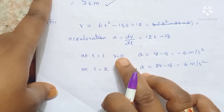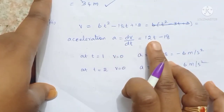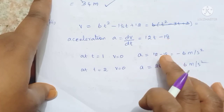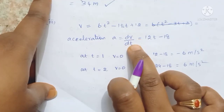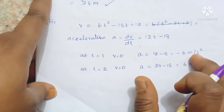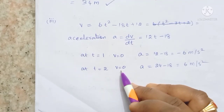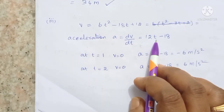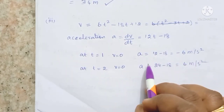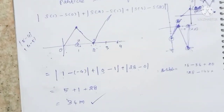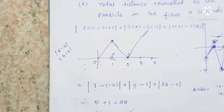At t equals 1 and t equals 2, the velocity is 0. Substituting t equals 1 into acceleration: a equals 12(1) minus 18 equals minus 6. Substituting t equals 2: a equals 12(2) minus 18 equals 24 minus 18 equals 6. So the acceleration when the velocity is 0 is minus 6 at t equals 1 and plus 6 at t equals 2. If you found this helpful, please like, share, and subscribe. Thank you for watching.